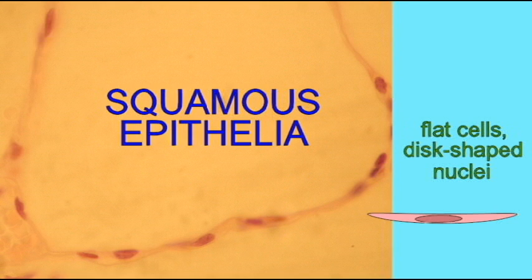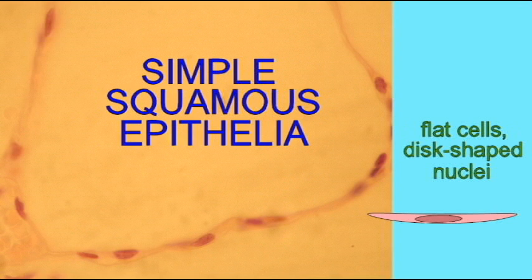They are flattened cells, and their nucleus is disc-shaped. This is a simple epithelia because there is only one layer of cells.